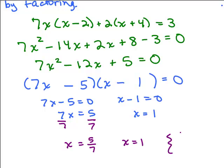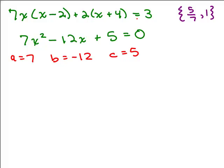To verify these solutions, you plug each back into the original equation one at a time. You'll need to deal with common denominators and be careful with fractions, at least for the 5 sevenths solution. Now let's solve the same problem using the quadratic formula. We already got 5 sevenths and 1 from factoring, and our standard form was 7X squared minus 12X plus 5.